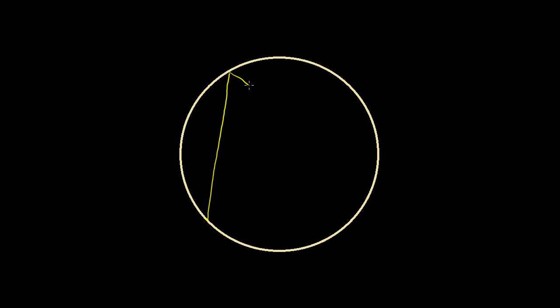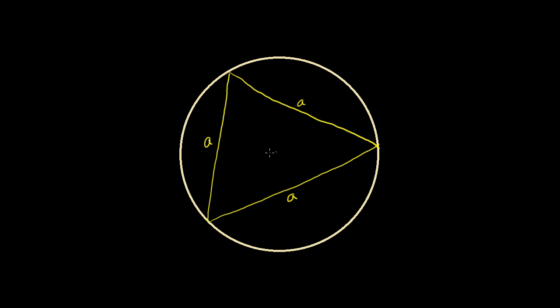What I want to do in this video is use some of the results from the last several videos to do some pretty neat things. So let's say this is a circle, and I have an inscribed equilateral triangle in this circle — all the vertices of this triangle sit on the circumference of the circle. When I say equilateral, it means all of these sides are the same length: side length a, side length a, and side length a. Let's say the radius of this circle is 2, so from the center to the circumference at any point, the radius is equal to 2.